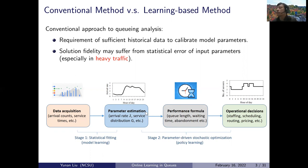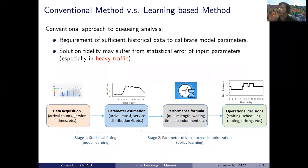One thing we don't often address is the upstream step. To obtain parameters lambda, mu, and G, we need data — arrival counts, service times, abandonment times — to fit these parameters. We often focus on stage two, completely trusting the precision of these parameters. Stage one, statistical fitting, is the missing step. If we want to put this into practice, we must carry out both stages. The main problem is that we may have insufficient historical data to calibrate model parameters such as lambda or mu.